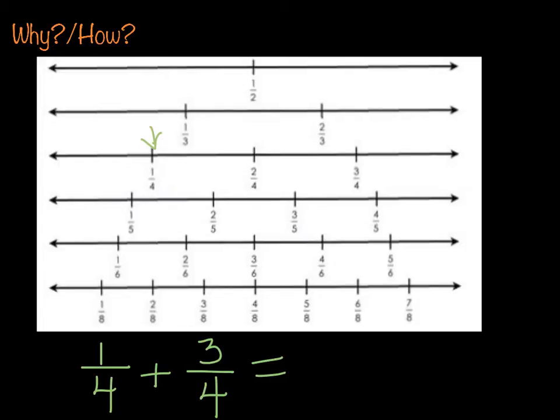I can look up here on my number line, and I'm going to start at one-fourth because that's my first fraction, and I am going to jump to the right three graduation marks. One, two, three, and that, of course, is going to be the whole number one. So that gives me four-fourths, or the whole number one, as my answer.